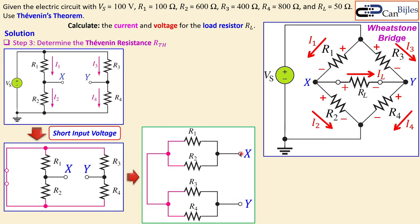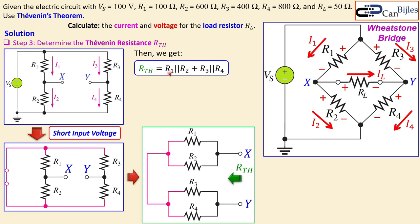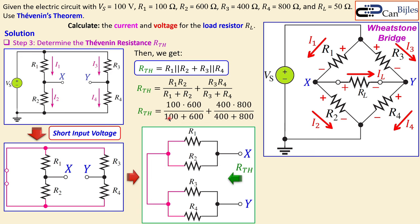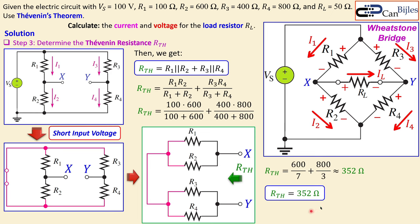To calculate the resistance between points X and Y, you look at the parallel combination of R1 and R2, plus the parallel combination of R3 and R4 — that is RTH. Writing this in formula form and substituting the given values — R1=100, R2=600, R3=400, R4=800 — you get exactly 16,600/7 + 800/3, which is approximately 352 ohms. We now have the Thevenin resistance for the equivalent circuit.